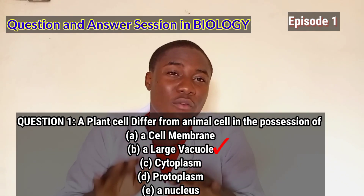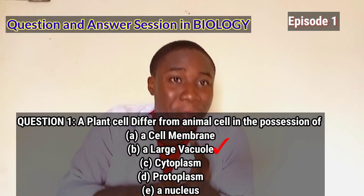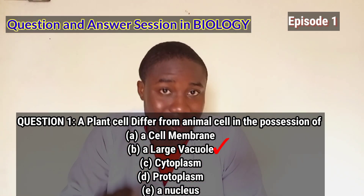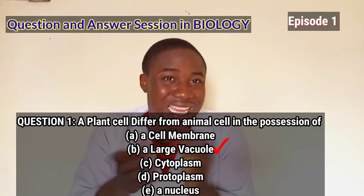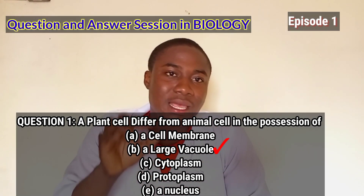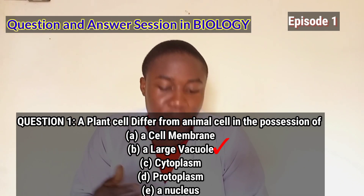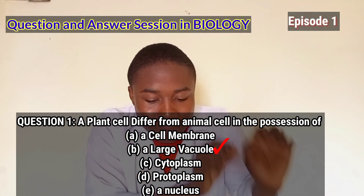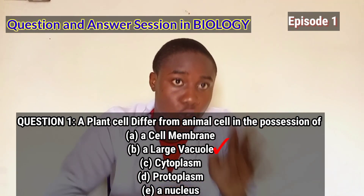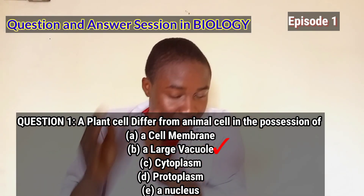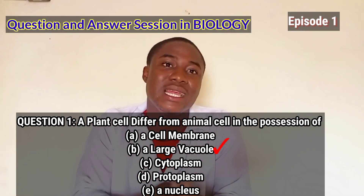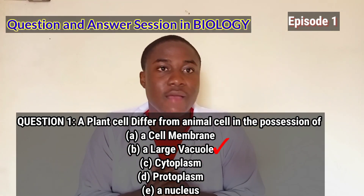It must be noted that all of the options — A, B, C, D, and E — are present in both plant and animal cells. But the difference is in option B, which is the vacuole. The vacuole in a plant cell is larger than the vacuole seen in an animal cell. In a plant cell the vacuole is large, while in an animal cell the vacuole is small.